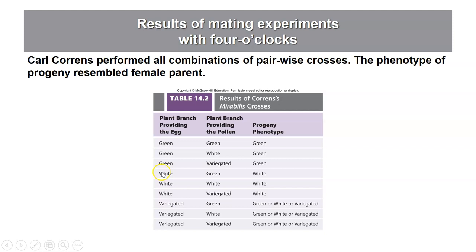Similarly, when he pollinated ovules on white stems with pollen from green, white, or variegated stems, he would always see the phenotype of the maternal donor of the ovule — white offspring — confirming maternal inheritance. When he pollinated ovules on variegated stems with pollen from green, white, or variegated plants, the result was slightly different: the offspring could be any of the three types — green, white, or variegated.